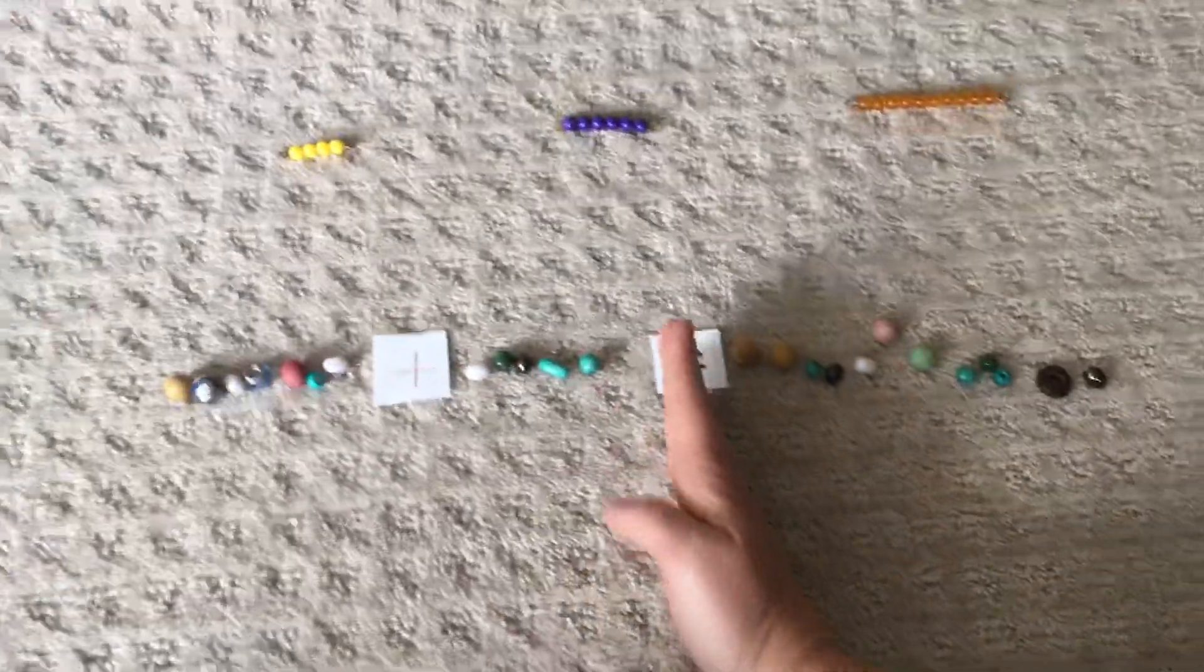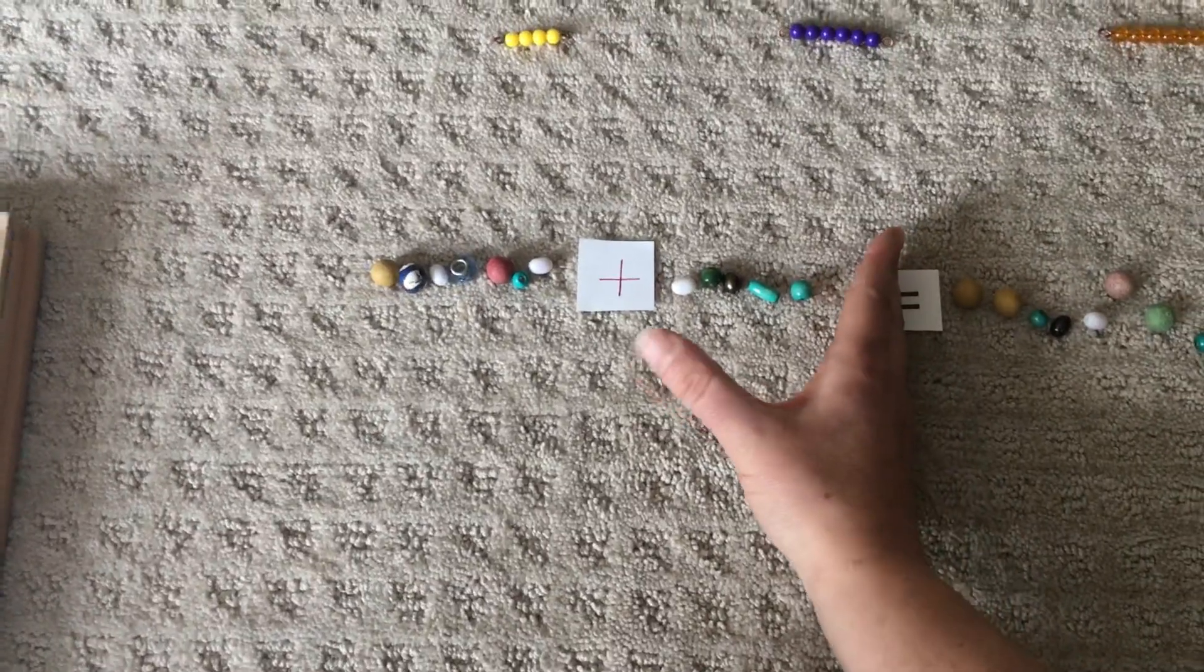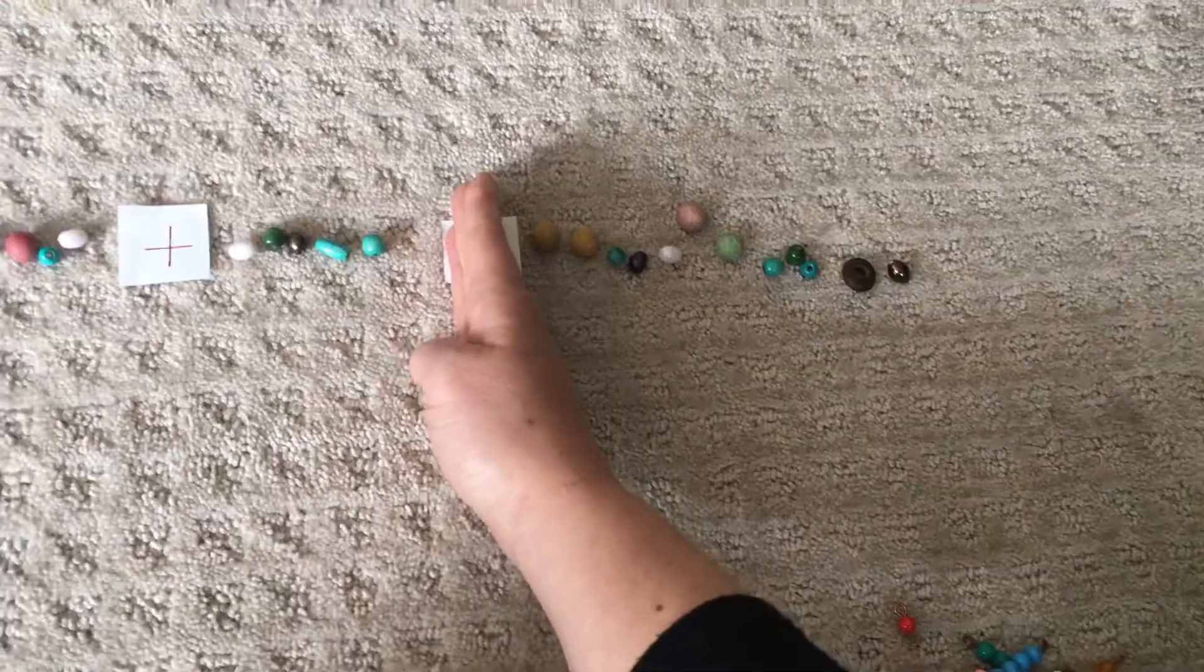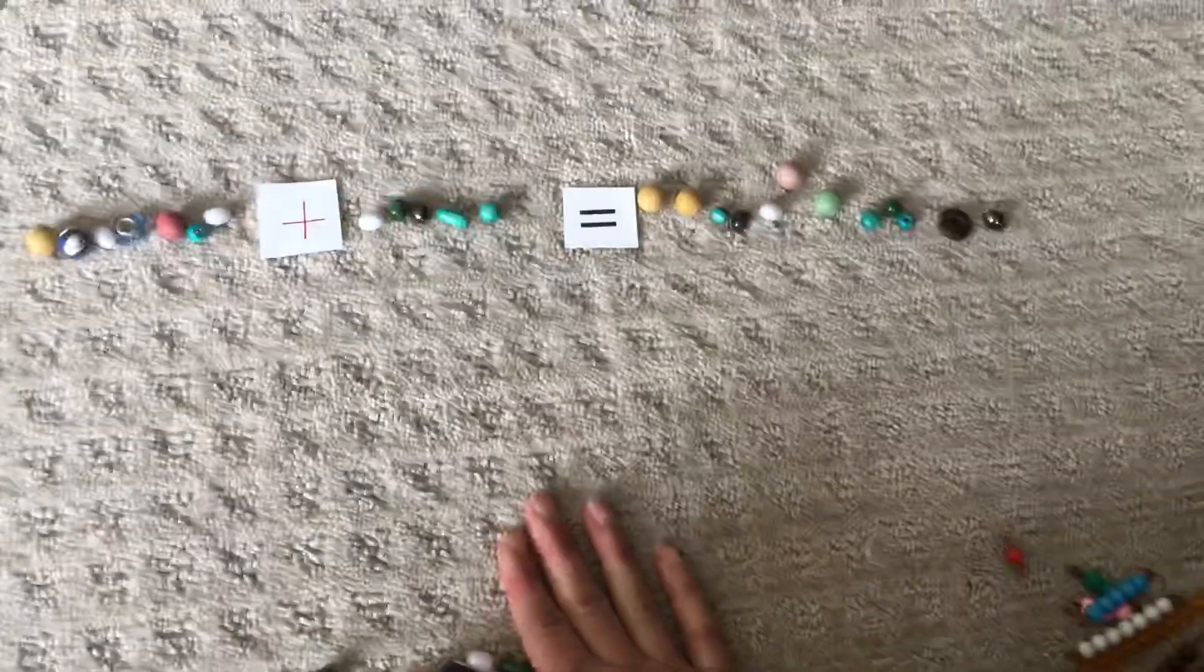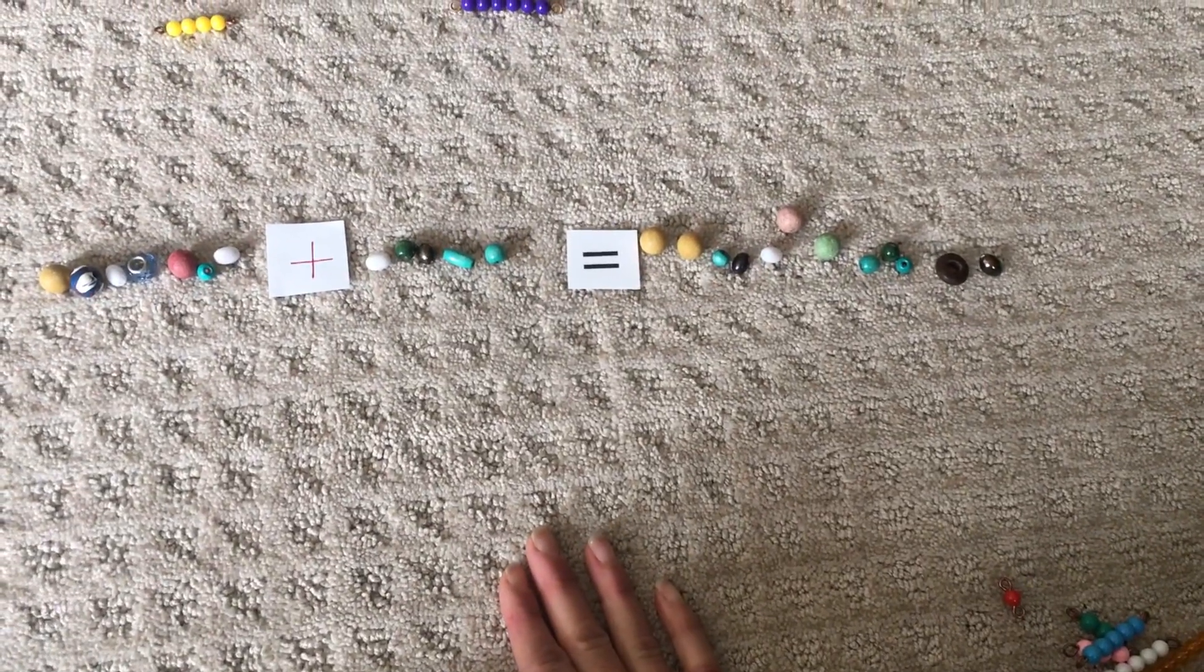And again, the equals means that this, if all those beads, we have just as many beads on this side. It's the same, right? It equals twelve. There's twelve here and there's twelve there.